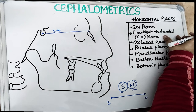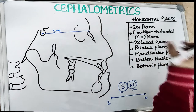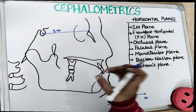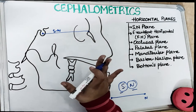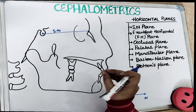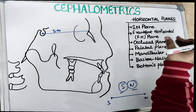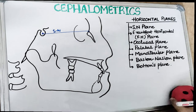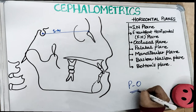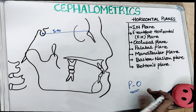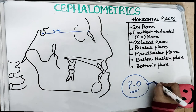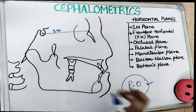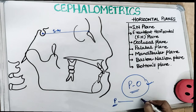The second plane is the Frankfurt Horizontal Plane, or FH plane. This plane is the gold standard for many analyses. It was introduced at an anthropological conference held in Frankfurt, Germany in 1884. You can remember it from PO — like a probationary officer for a bank, the entry-level position. It is a plane which connects two points: the first is the porion (P) and the second is the orbital point (O).